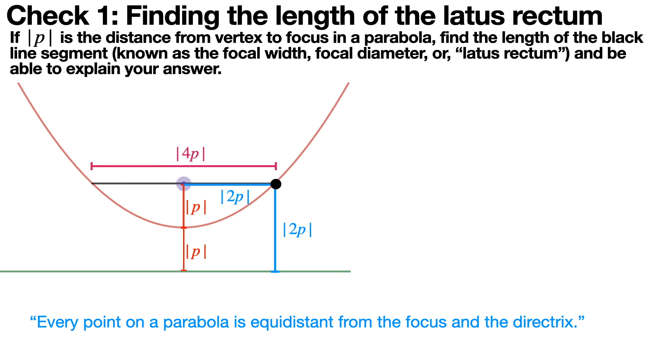And because of symmetry, that means that the entirety of that black line is going to be double 2p, which is 4p. So the distance is going to be the absolute value of 4p. Now why the absolute value? Because distances are always positive. But if p was positive in the beginning, you didn't need to write all those absolute values there.